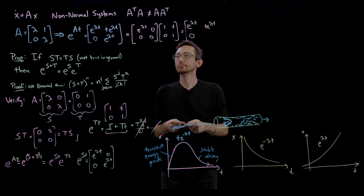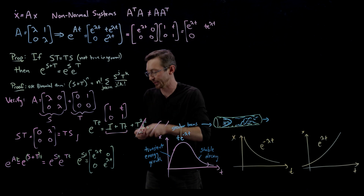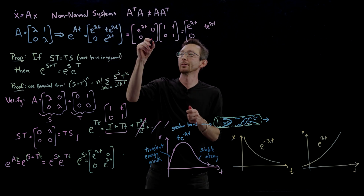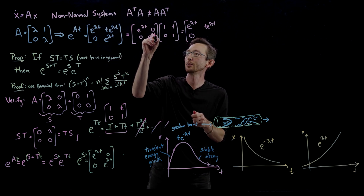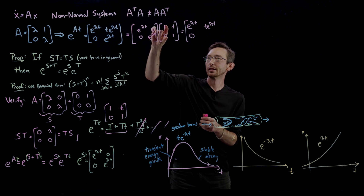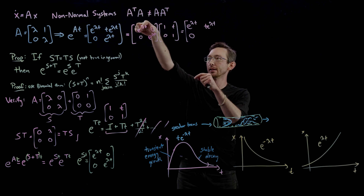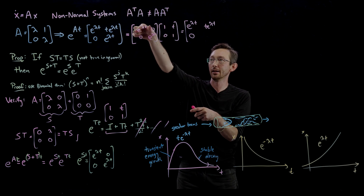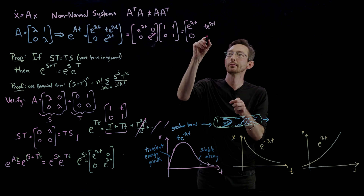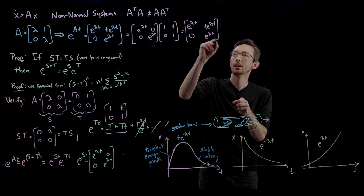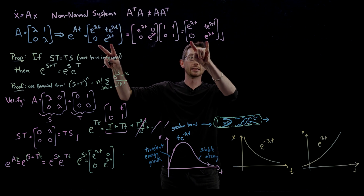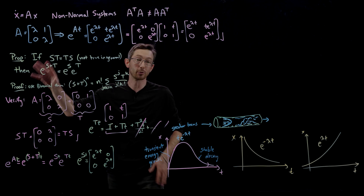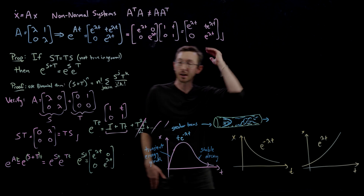Let me redo that multiplication carefully: the top row of e^(St) times e^(Tt) gives e^(λt)·1 = e^(λt) and e^(λt)·t = t·e^(λt); the bottom row gives 0 and e^(λt). So the final result is [e^(λt), t·e^(λt); 0, e^(λt)]. This verifies that expression I wrote down is indeed what you get when computing this matrix exponential using the proposition.